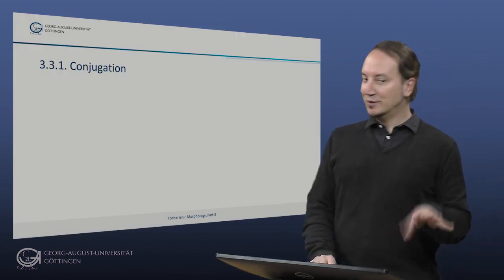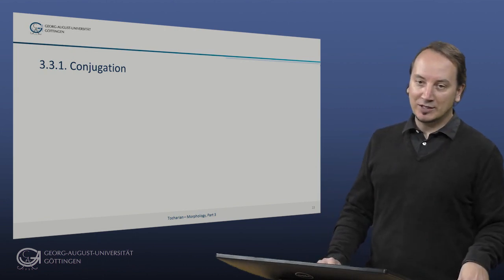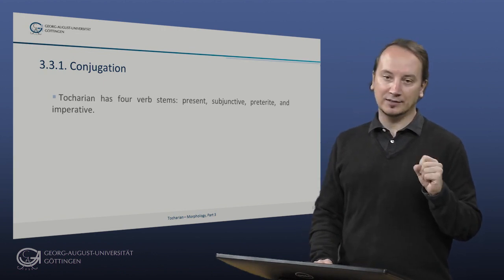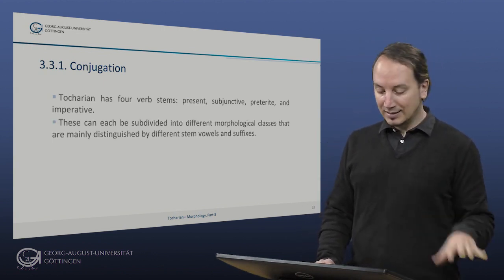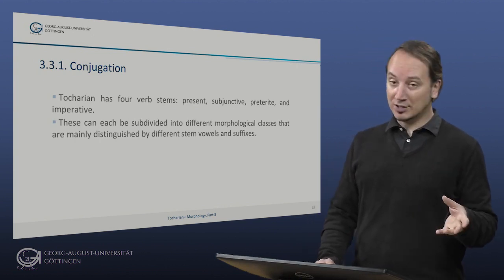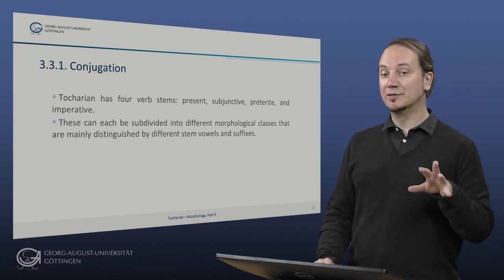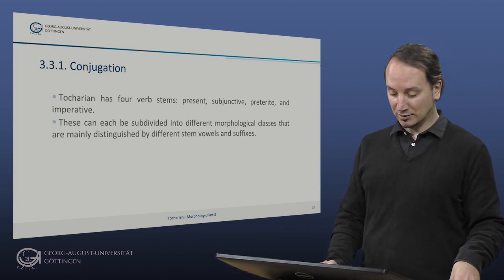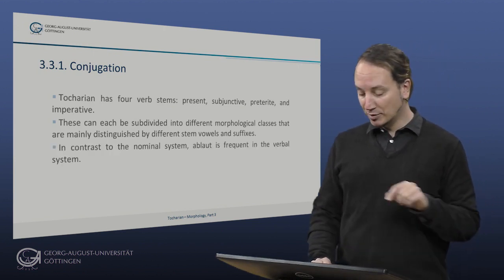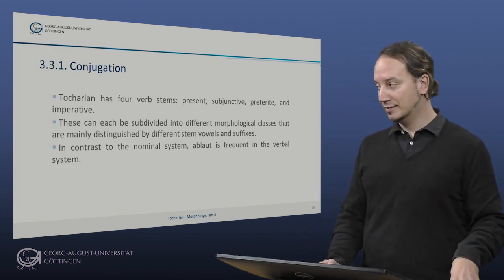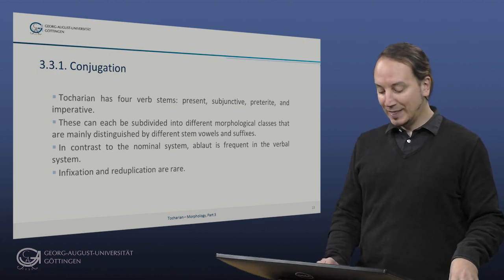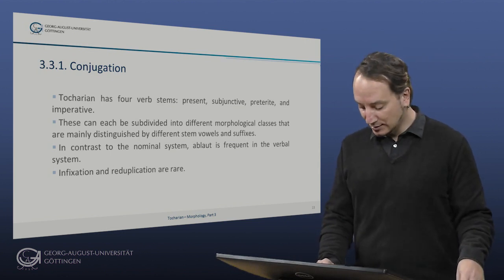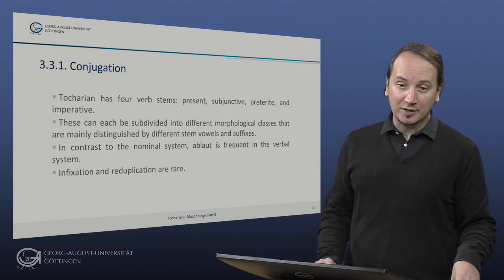Let's briefly turn to the verbal system. Tocharian has four verb stems: the present, the subjunctive, the preterite, and the imperative stem. These can be further subdivided into different morphological classes that are mainly distinguished by different stem vowels and different suffixes that are attached to these stems. In contrast to the nominal system, ablaut is actually frequently attested in the verbal system.